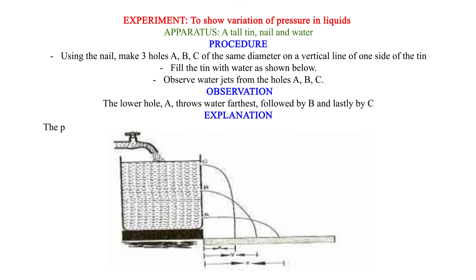Explanation: The pressure of water at A is greatest than pressure at B and pressure at B is greater than pressure at C. Hence, pressure increases with depth.